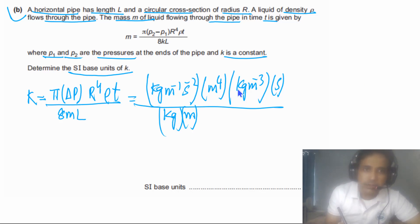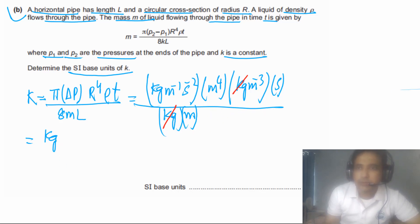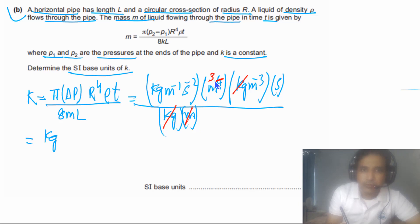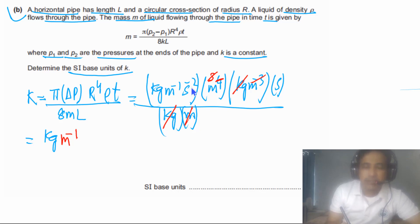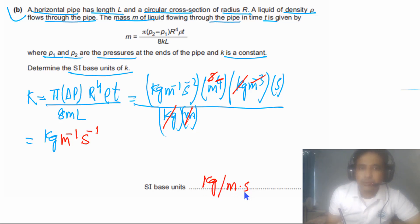Now we simplify. We have kg in the numerator from pressure and kg in the denominator from density — these cancel, leaving one kg in the numerator. Looking at meters: we have meter to the power 4 from R, and meter to the power minus 1 from pressure and meter cubed from density in the denominator, plus one meter from L. After cancellation, we are left with meter to the power minus 1. For seconds: we have s to the power minus 2 and s to the power 1, giving s to the power minus 1. So the SI base units for K are kg per meter per second, which can also be written as kg m⁻¹ s⁻¹.